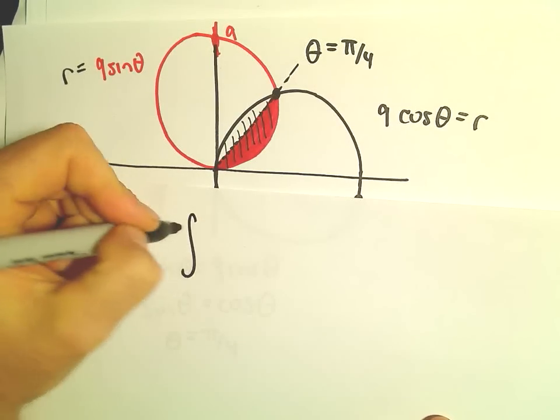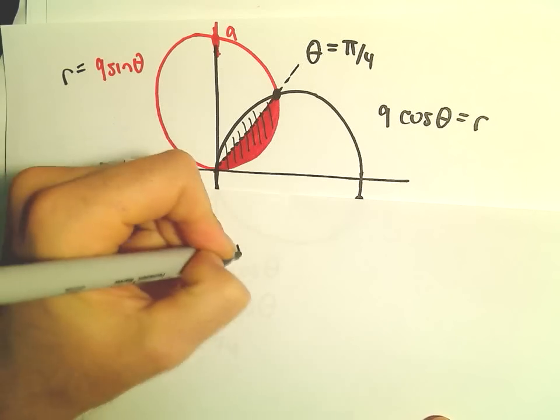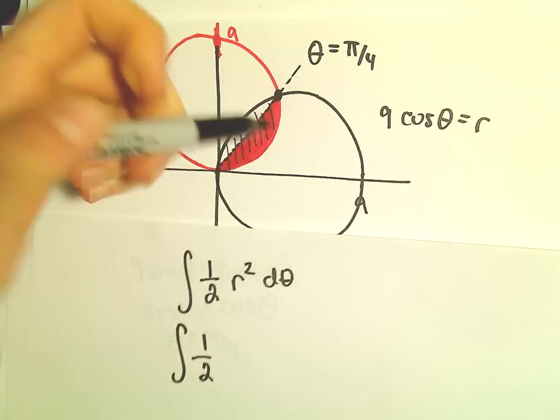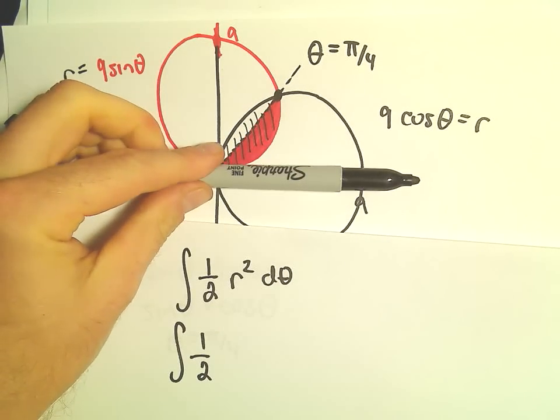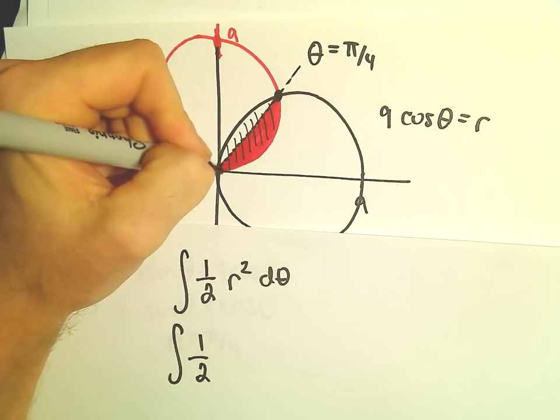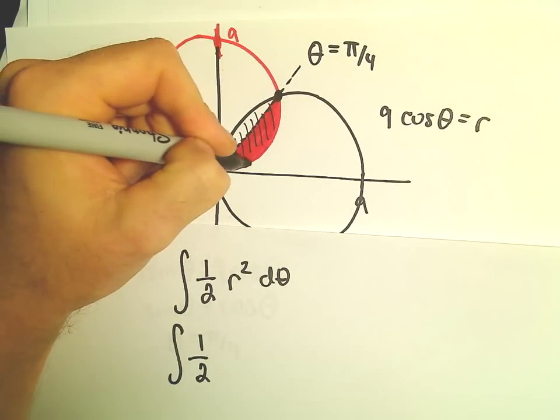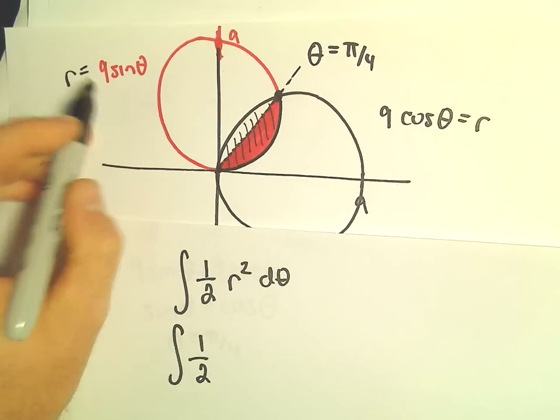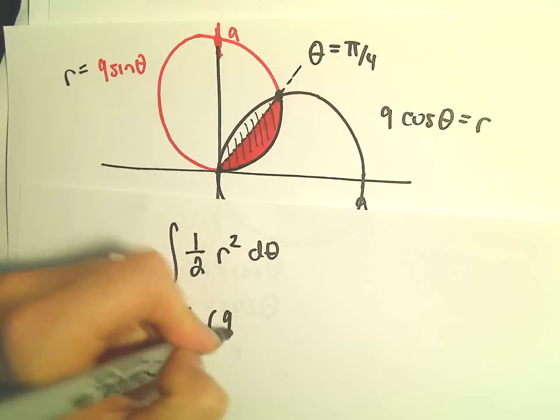To find half of the region, I'm going to use the formula 1 half r squared d theta. And here I'm going to use 1 half, I'm going from theta equals 0 up to theta equals pi over 4. So this region that I'm interested in, it's bounded by the curve r equals 9 sine theta. So that's the curve I'm going to use.